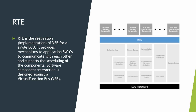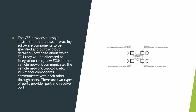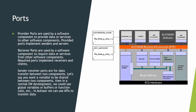Let's move on to RTE. As already said, RTE is the realization of VFB, and it provides the actual communication mechanism between software components inside an ECU. In VFB, communication happens via ports. There are two kinds of ports: the provider port and the receiver port. Provider ports are used to send data or a service to other components, and receiver ports are used to receive data or a service from other components.